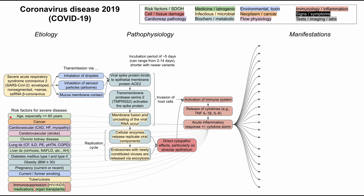Age has been found to be the biggest risk factor, especially in people aged 65 or over. People with current or a history of cancer are predisposed. Cardiovascular disease is a risk factor, including coronary artery disease, heart failure, and cardiomyopathies, as well as cerebrovascular diseases such as stroke. Chronic kidney disease, and lung diseases including cystic fibrosis, interstitial lung disease, pulmonary embolisms, pulmonary hypertension, and COPD are all risk factors.